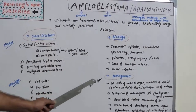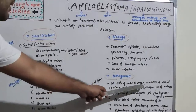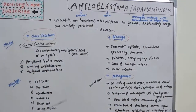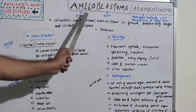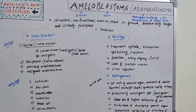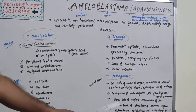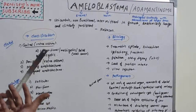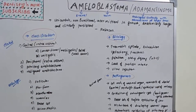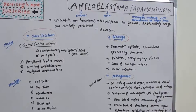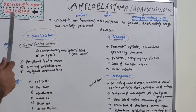In pathogenesis, it is believed to derive from cell rests of the enamel organ, remnants of dental lamina, Hertwig's sheath, epithelial rests of Malassez, epithelium of odontogenic cysts (most commonly the dentigerous cyst), odontoma, basal cells of surface epithelium of the jaw, disturbance of the developing enamel organ, and heterotopic epithelium of the pituitary gland.